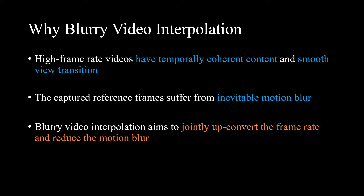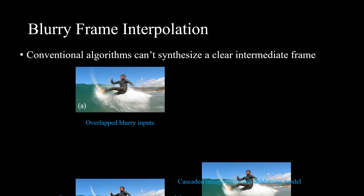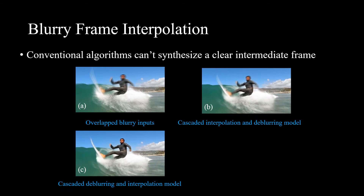Blurry video interpolation aims to jointly upconvert the frame rate and reduce the motion blur. Conventional frame interpolation algorithms directly move or warp the pixels of the reference frames to the position of the target frame. If motion blur exists in the reference frame, conventional frame interpolation algorithms cannot synthesize clear frames.